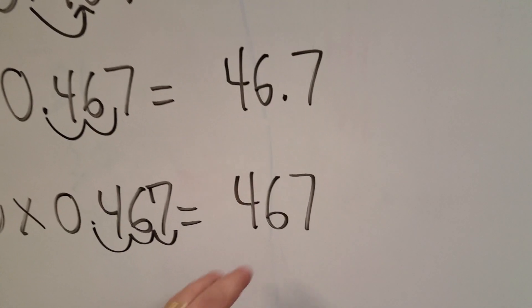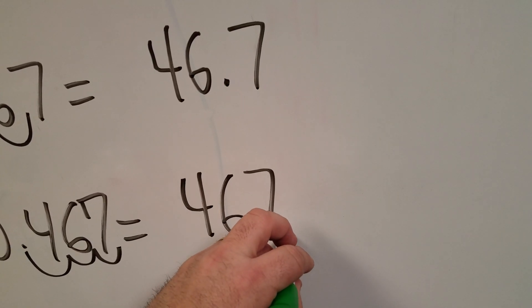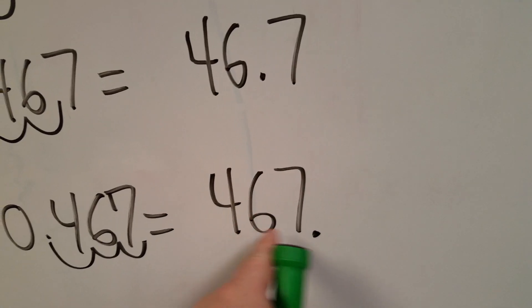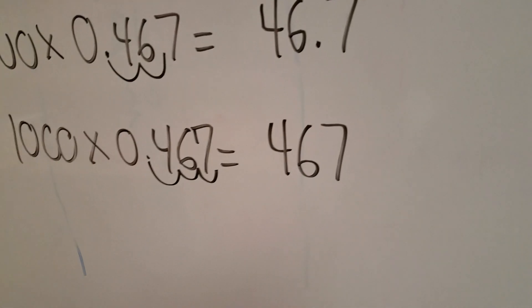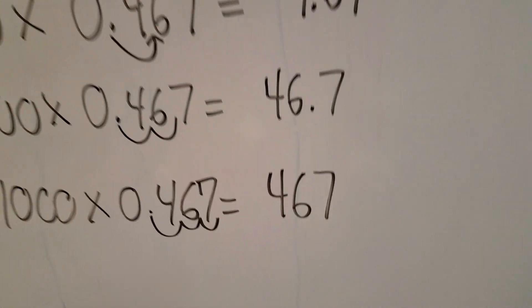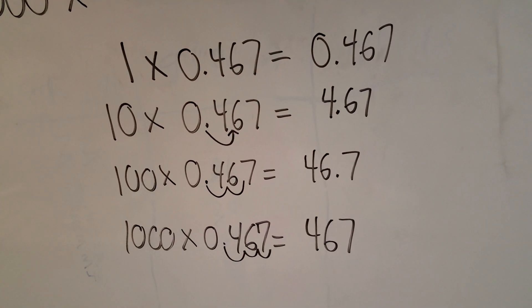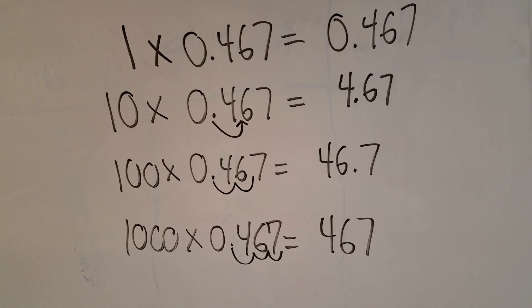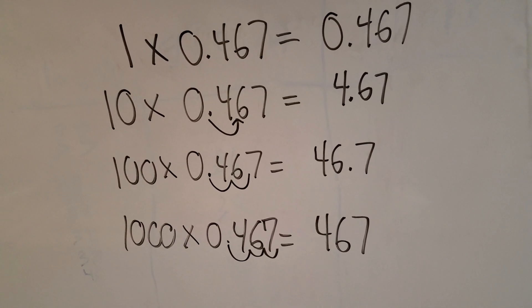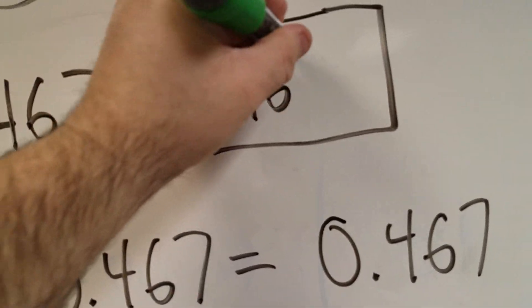And you can see, now the decimal's after the 7. And remember, with whole numbers, we don't need to put the decimal here, because it's 467 and nothing. So when it comes to whole numbers, we just leave it like that, 467. So you can see, the decimal was before the 4, after the 4, 2 spaces after the 4, and then finally, our problem of 1,000 times 467 thousandths leaves us with 467.